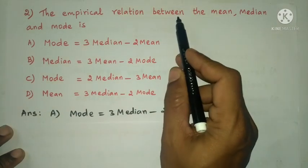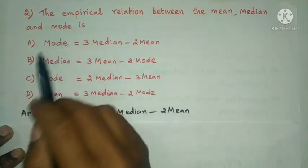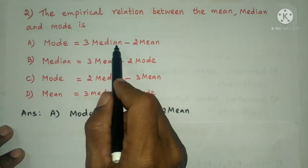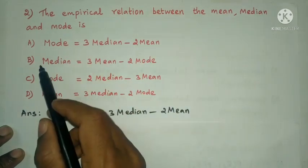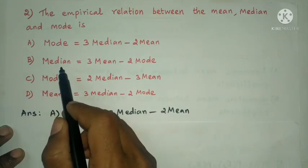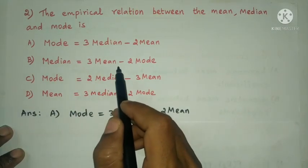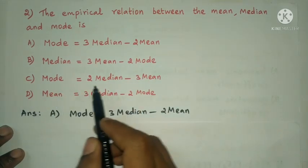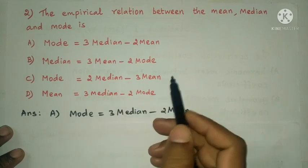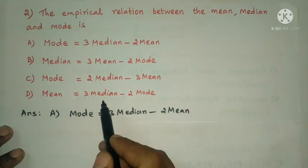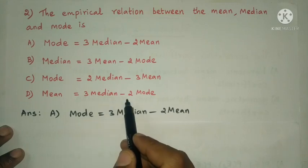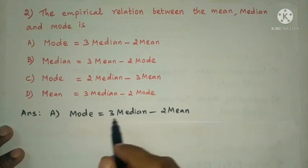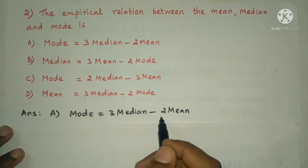Next question: the empirical relation between the mean, median and mode is? Option A: Mode = 3 Median − 2 Mean. Option B: Median = 3 Mean − 2 Mode. Option C: Mode = 2 Median − 3 Mean. Option D: Mean = 3 Median − 2 Mode. The answer is option A: Mode = 3 Median − 2 Mean.